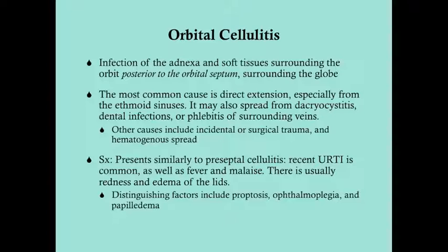The distinguishing red flags for orbital cellulitis are: proptosis (bulging of the eye), ophthalmoplegia (loss of range of motion of the orbit), and papilledema (swelling of the optic disc). If you see any of these signs, get a CT immediately — you would never diagnose preseptal cellulitis if any of these features are present.